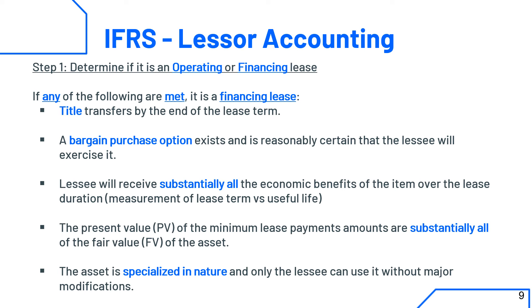For example, if a car lasts 15 years and the lease is for 13 years, that's substantially all of its useful life. In IFRS, no solid percentage is given, so you have to use professional judgment. The fourth criteria is that the present value of minimum lease payments is substantially all of the fair value of the asset — again, vague in IFRS and requiring judgment. A tip: to get marks for criteria three and four, you must actually do the math to calculate the percentage of useful life and the present value of minimum lease payments compared to fair value.